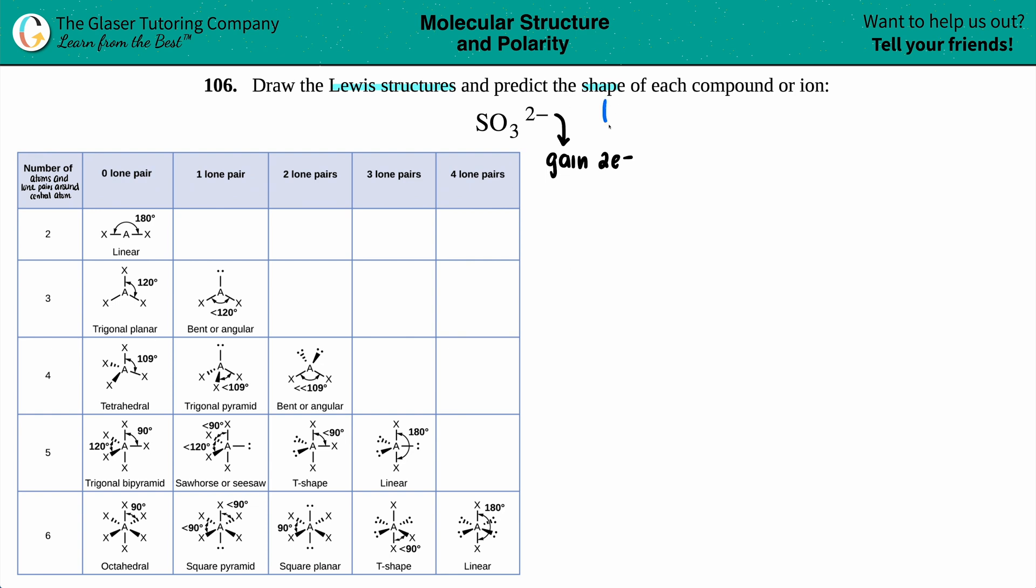Now when they say predict the shape, basically what we have to do is find the molecular geometry or the molecular structure. I like to use the term molecular geometry, but it's the same exact thing. But in order to find the molecular geometry, you always got to get that Lewis structure first.